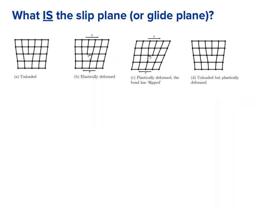Conceptually, we want to know what the slip plane or glide plane is. A dislocation moves one step at a time — this is dislocation glide or dislocation slip. This is happening in the slip plane, which is the plane that contains both the Burgers vector and the dislocation line.